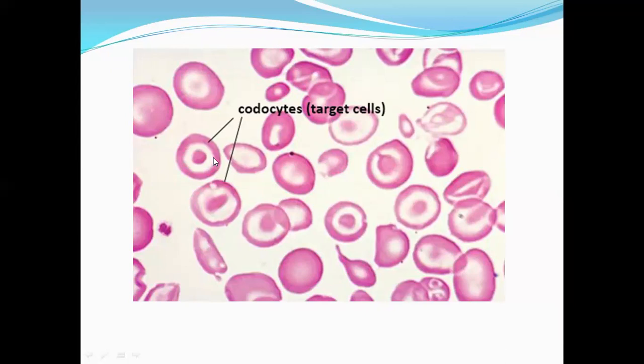Romanowsky stains are used after killing and fixing the cells. For reticulocyte count staining, you use supravital staining. Supravital staining means the technique is used in the living state of the cell — we do not kill or fix the cell; we just add the stain to the living cell. New methylene blue and methylene blue fall into this category, as does brilliant cresyl blue.